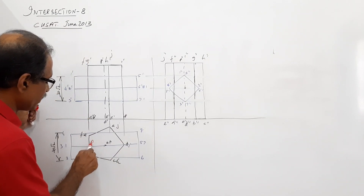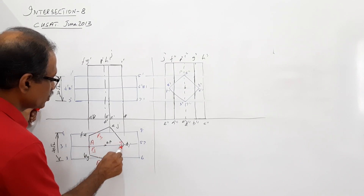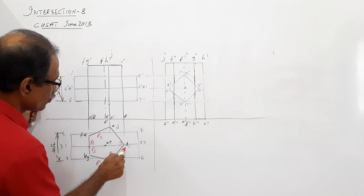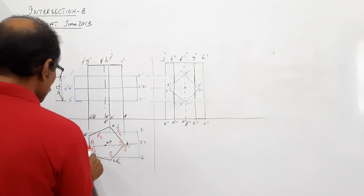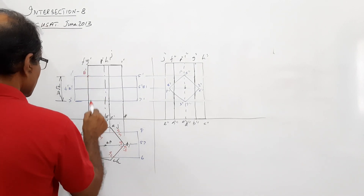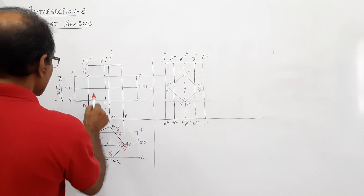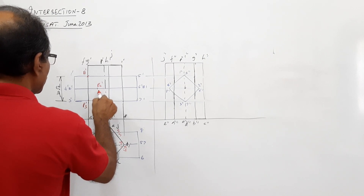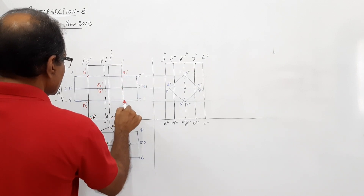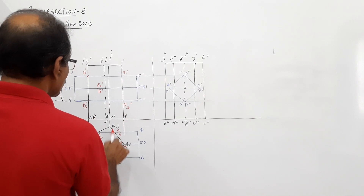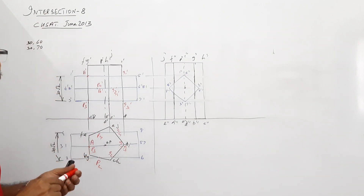The intersection points are labeled P1, P2, P3 (which coincides with P1), and P4 on one side, and Q1, Q2, Q3, Q4 on the other side. When you project P1 to the elevation, you get P1-dash. Similarly, projecting gives P2-dash, P3-dash, and P4-dash in the elevation.